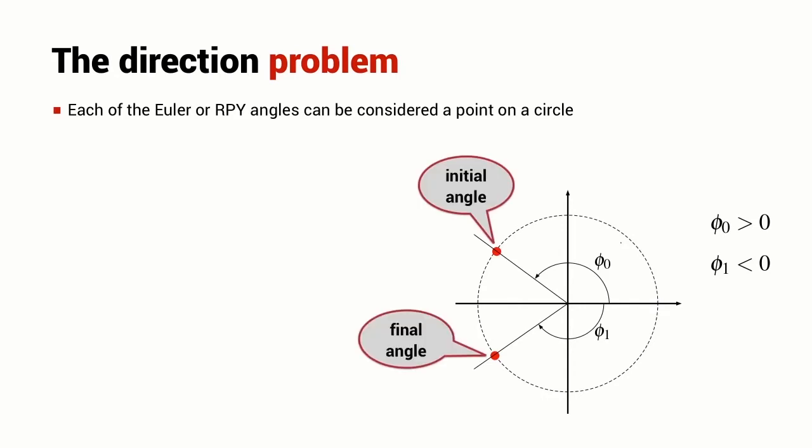Consider now the case where we have this initial angle and this final angle and a naive interpolation would move us from the initial angle to the final angle the long way around the circle. What we need to remember with angles is that there are always two ways to get from A to B. There is potentially the long way and there is potentially the short way. So when we are interpolating each element in our angle sequence vector, it is important that we choose the shortest path.